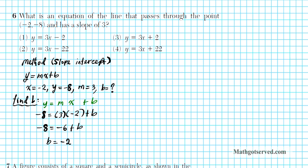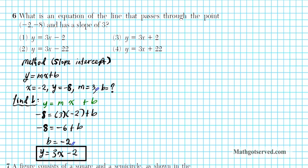Let's plug in b which is negative 2 and m which is 3 into the slope-intercept form of the equation of a line. That gives us y equals mx plus b, so plus negative 2 becomes minus 2. The result is y equals 3x minus 2, and that is the equation of the line going through negative 2, negative 8 with a slope of positive 3.